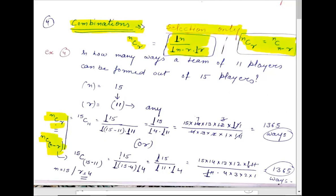Example: In how many ways can a team of eleven players be formed out of fifteen players? We need to create a team of eleven players out of fifteen. There is no special condition. To choose 11 from 15, n is 15 and r is 11. So our formula will be 15C11, that is factorial 15 divided by factorial (15 minus 11) into factorial 11.